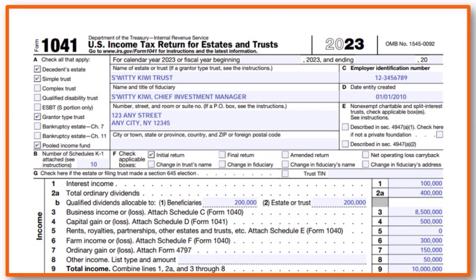If there is any business income or loss you have to attach Schedule C. In our case the estate generated $8,500,000. If there is any capital gain or loss, we have half a million. For every income item you have to attach the ancillary schedule that applies - whether it is Schedule C, Schedule D, Schedule F, or from Form 4797 for ordinary gain or loss. Total income here is $10 million.